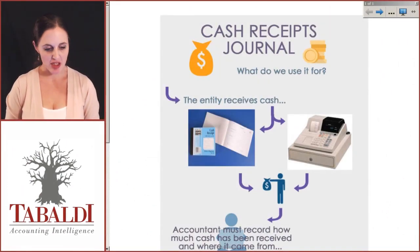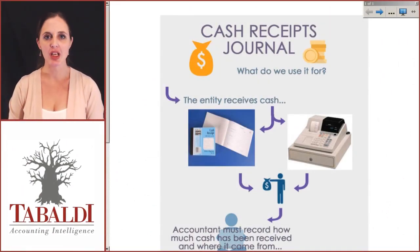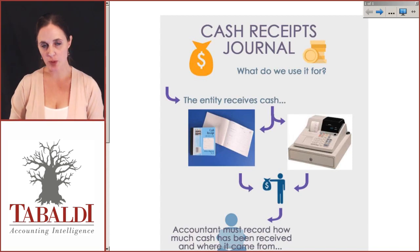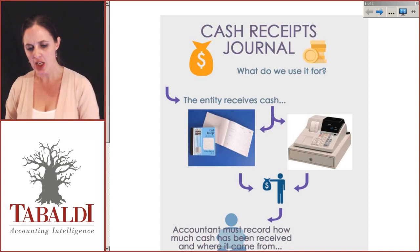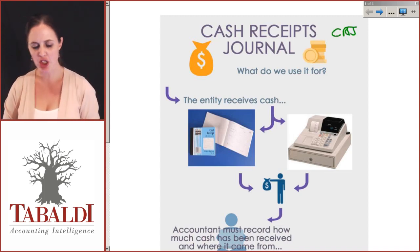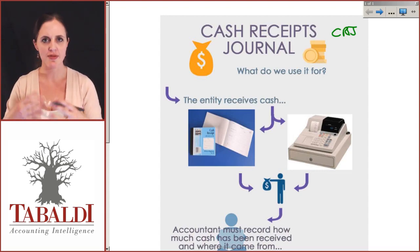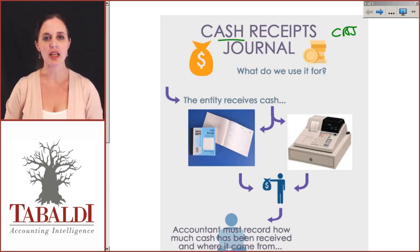Let's take a look at the cash receipts journal. I've drawn this up so that we can try and visualize what it is that we're trying to deal with before we actually get into the detail and format of the CRJ itself. We keep referring to this as the CRJ — the cash receipts journal — and what is it that we actually use this for?